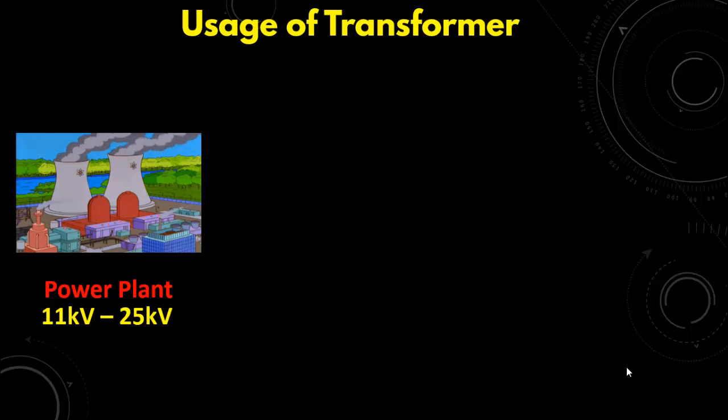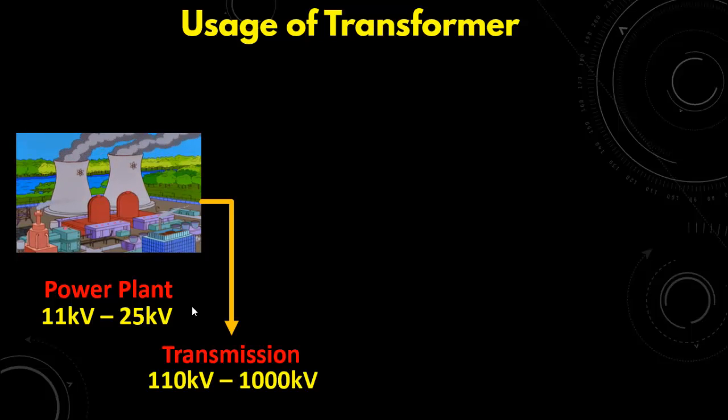So let us start by first going to the generating station in which the electricity is produced. The level of electricity at the generating station ranges between 11 kV to 25 kV. This voltage level has to be stepped up in order to transmit over the long distances to avoid transmission losses. So what we do, we use the transformer to step up this voltage from 25 kV to 110 kV up to a thousand kV.